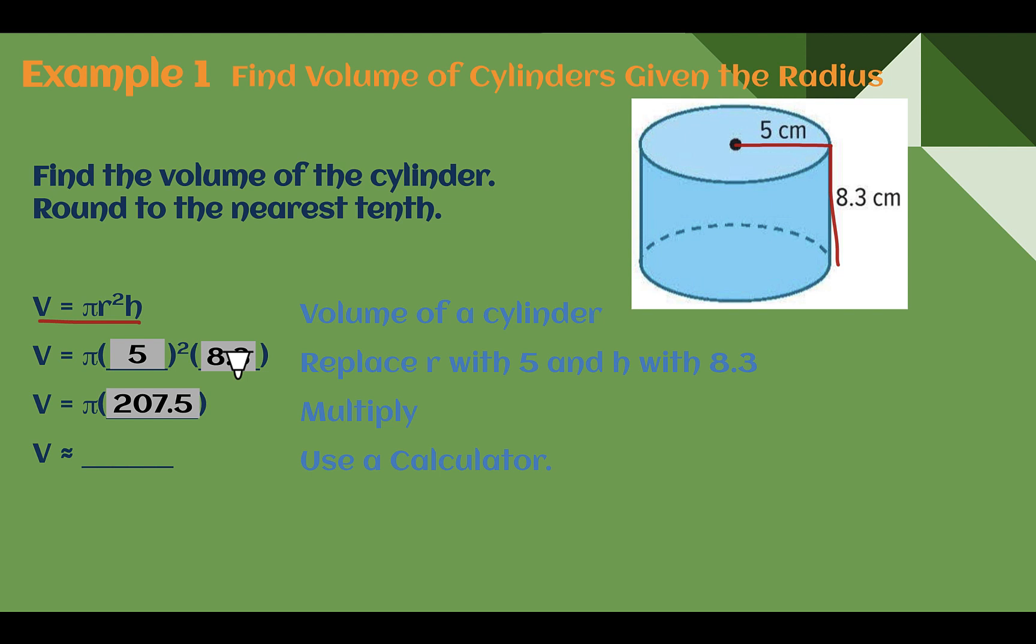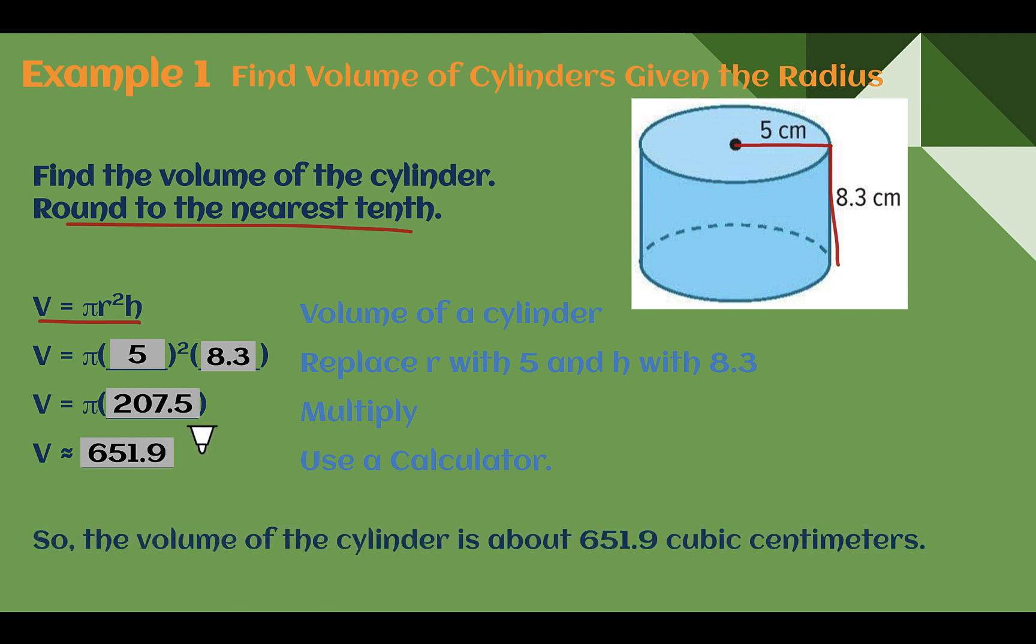Here's where I need to decide if I need to do in terms of π, or am I using my calculator button. This tells me to round to the nearest tenth, which means π is not going to be in my answer. So 207.5 times π on the calculator is 651.9, nearest tenth, so one place after the decimal. So the volume of the cylinder would be about 651.9 cubic centimeters. Or we could just write it as centimeters to the third power.